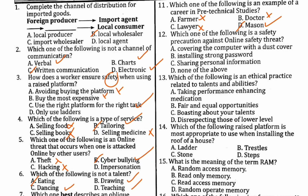Number twelve: which one of the following is a safety precaution against online safety threats? Covering the computer with a dust cover — no, that is a physical precaution. Installing a strong password — yes. Sharing personal information — that is not true. None of the above — not true. So the answer is B: installing a strong password.